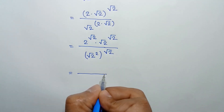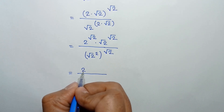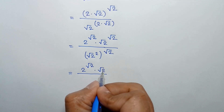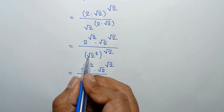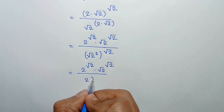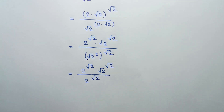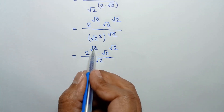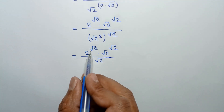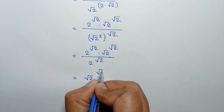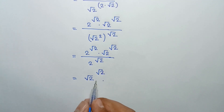This equals 2 to the power square root of 2, times square root of 2 to the power square root of 2. The square root and the square cancel out, leaving 2 to the power square root of 2. Then the 2 to the power square root of 2 terms cancel out, leaving square root of 2 to the power square root of 2. This is the simplified form of the expression.